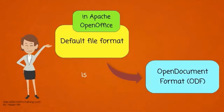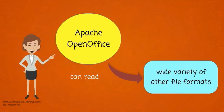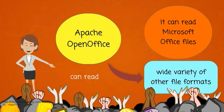Apache OpenOffice's default file format is the Open Document Format, called ODF. It can also read a wide variety of other file formats. Particular attention is paid to reading Microsoft Office files.